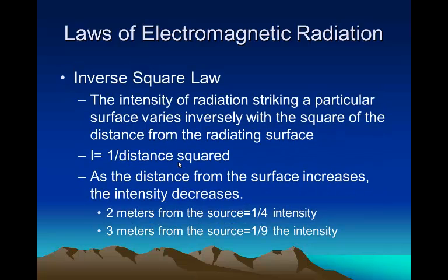And finally, the inverse square law. This says that the intensity of radiation striking a particular surface varies inversely with the square of the distance from the radiating surface. So as the distance from the surface increases, the intensity decreases.